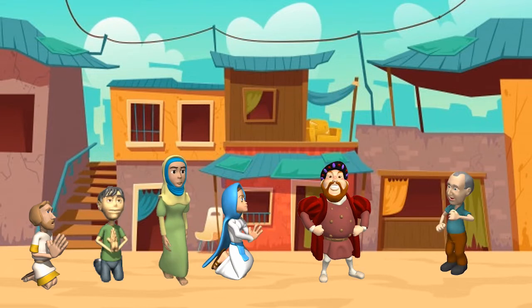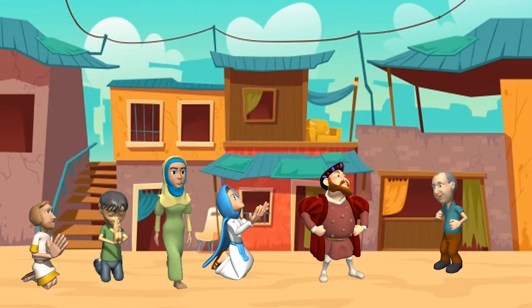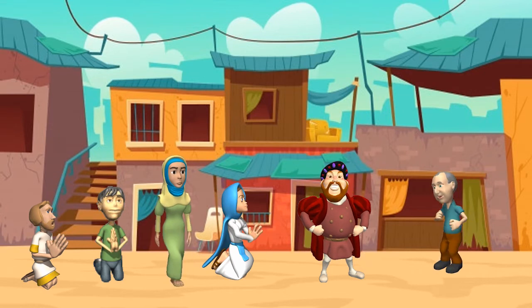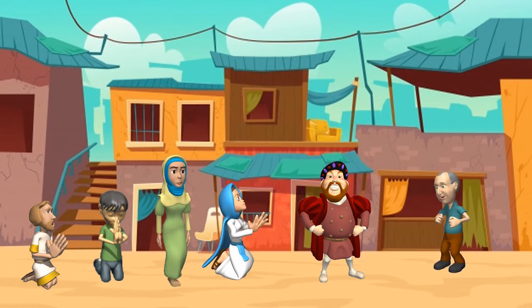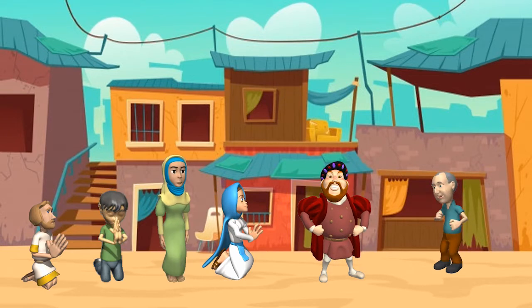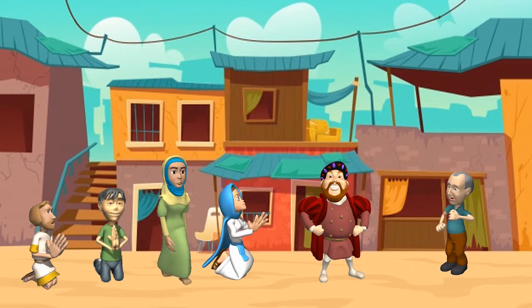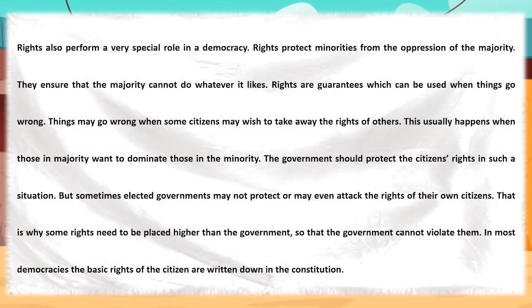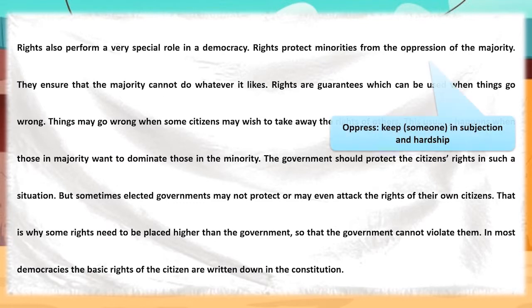Rights prevent the majority population from exploiting and humiliating minorities. When things go wrong, rights guarantee justice. When the majority oppresses the minority, it is the duty of the government to protect citizens' rights. Sometimes the government refuses to protect citizens' rights — that's why some rights are kept above the government so they cannot be violated. Democracies protect human rights by writing them down in a constitution.